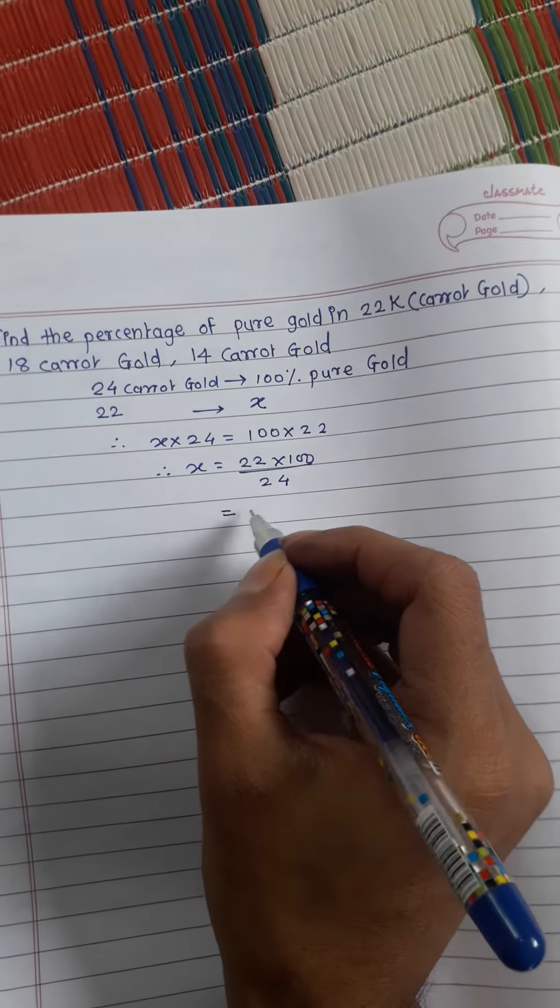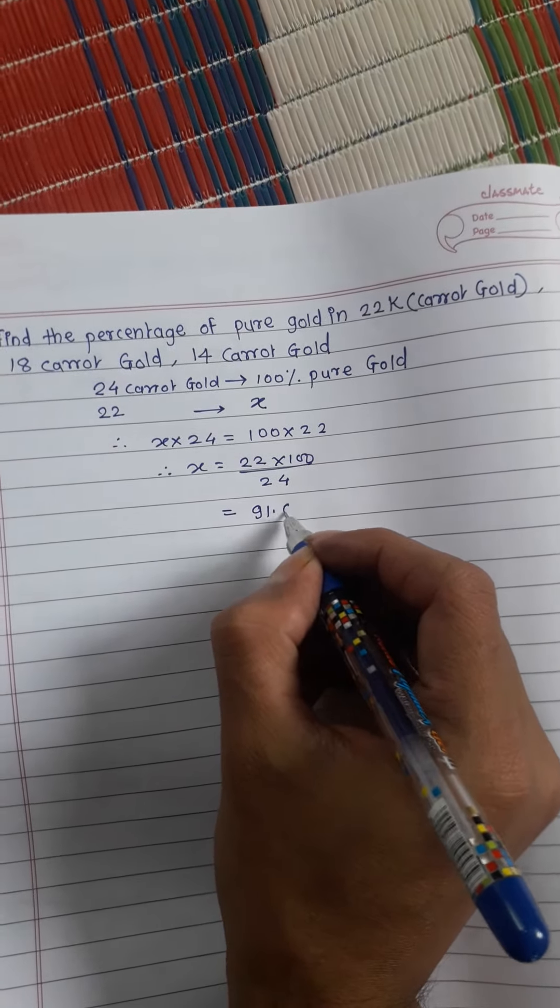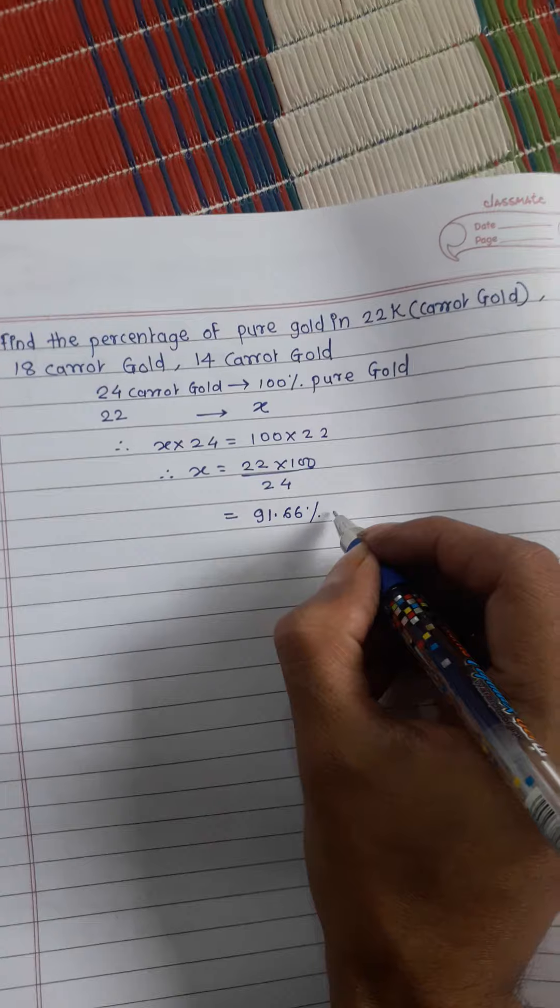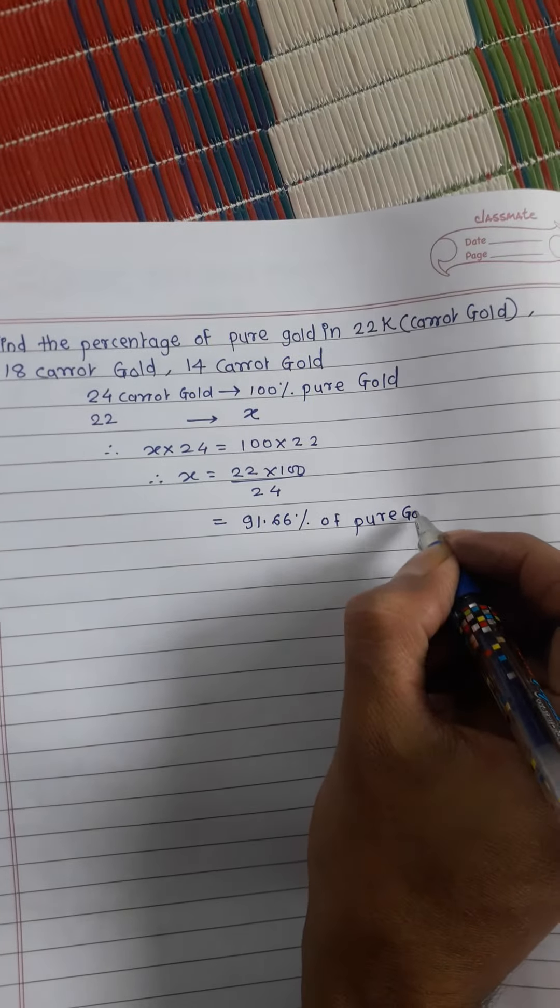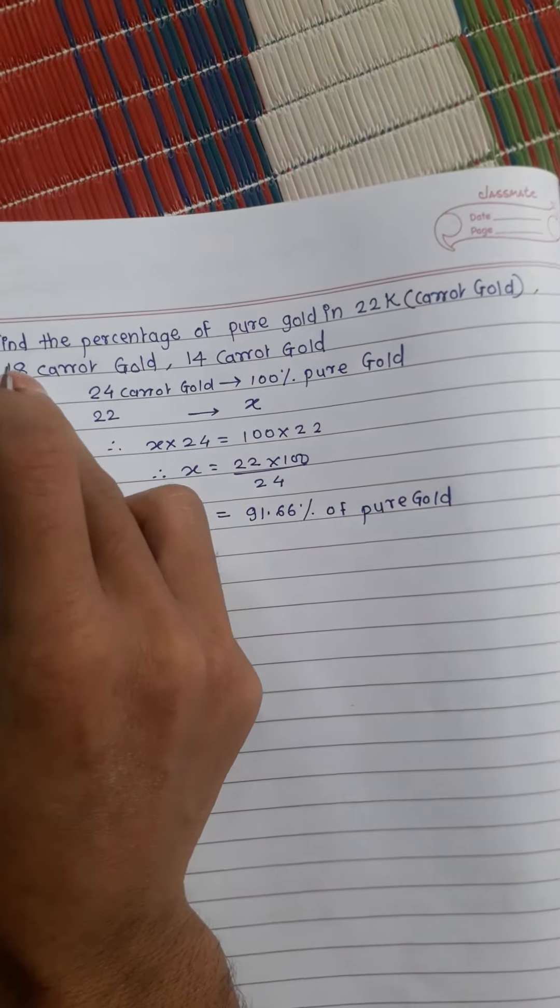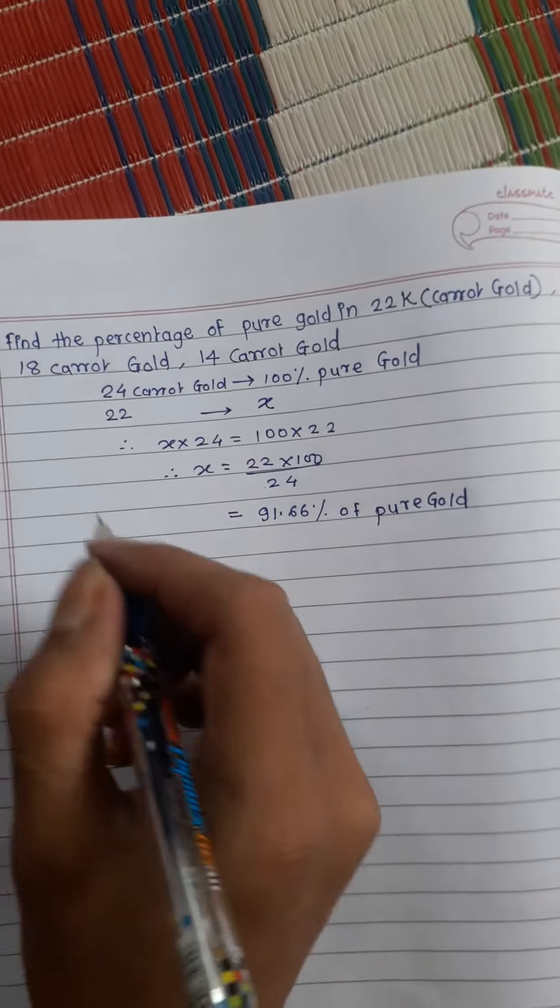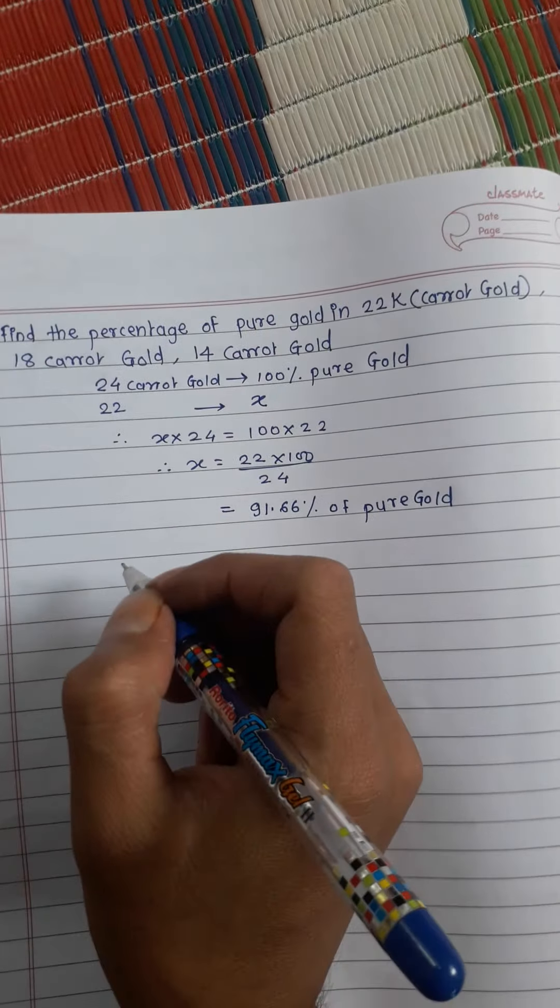Therefore the value comes 91.66 percent of pure gold.